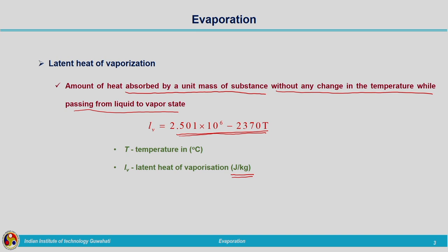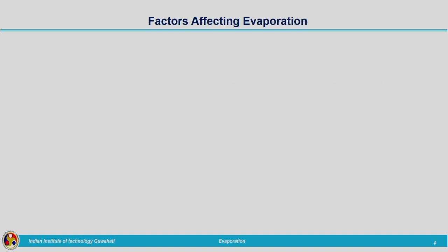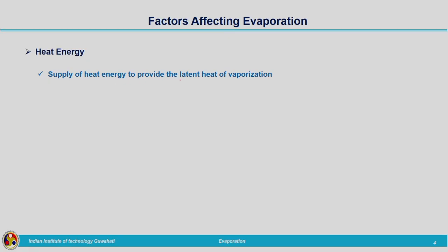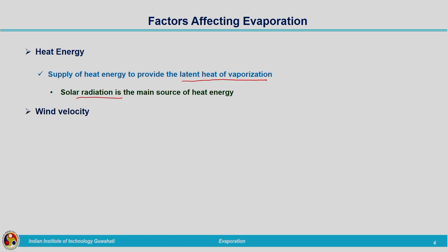Now let us move on to the factors which are influencing evaporation. The main factor is heat energy — the solar energy from the sun. This is providing the latent heat of vaporization, which is the amount of energy required by the molecule to change its state from liquid to vapor. The main source is solar radiation.